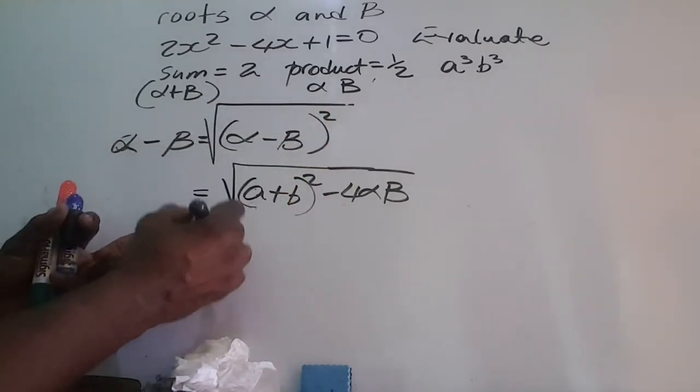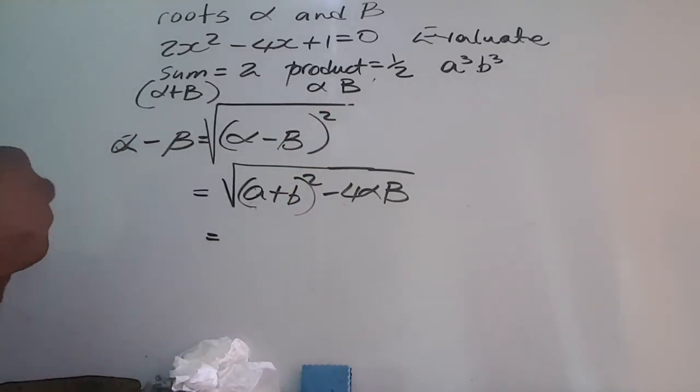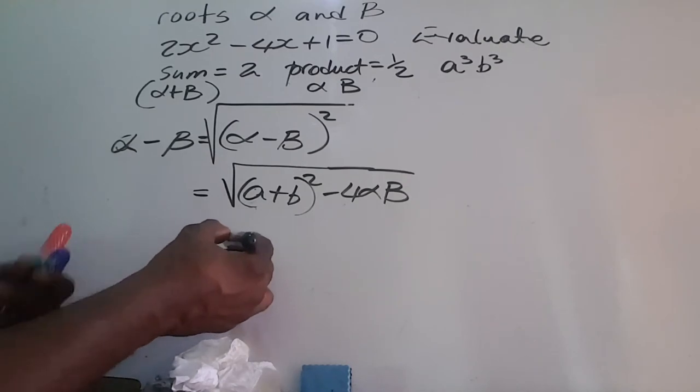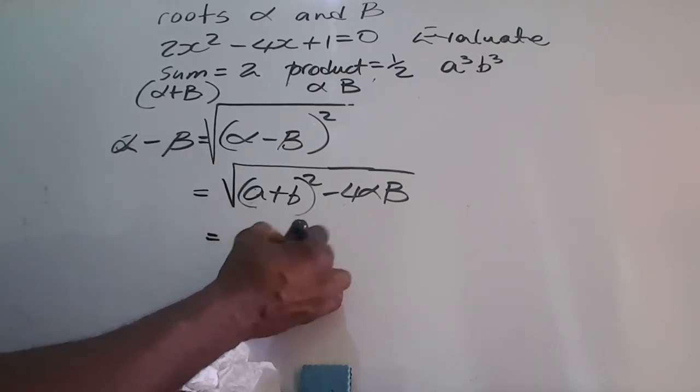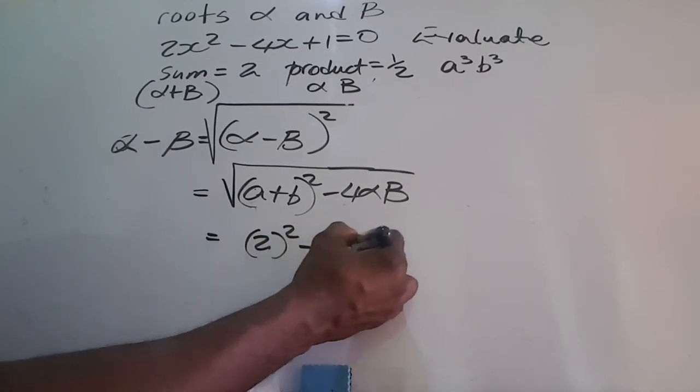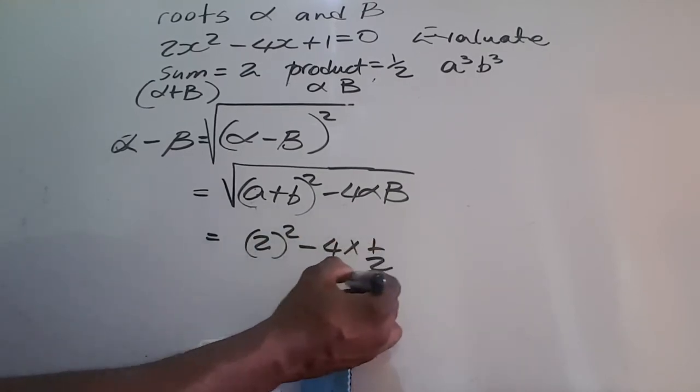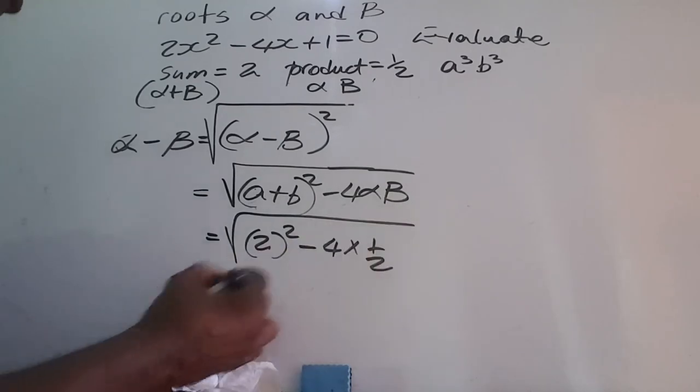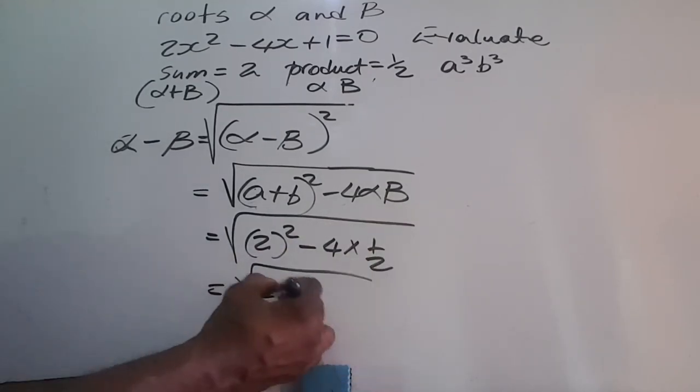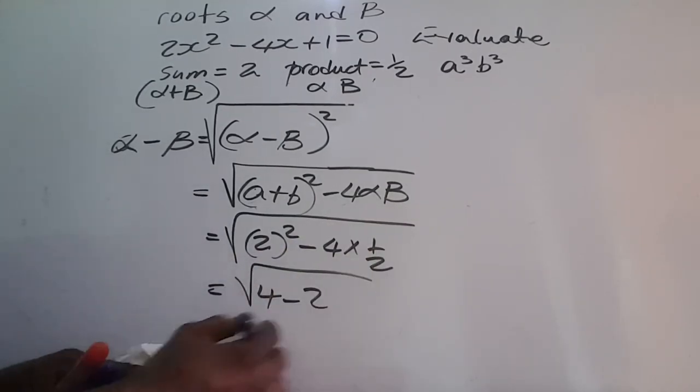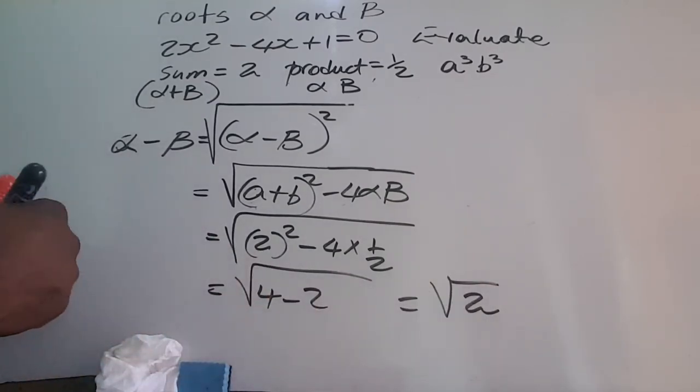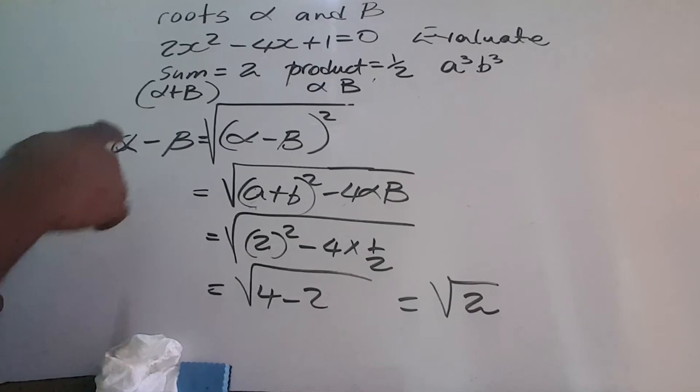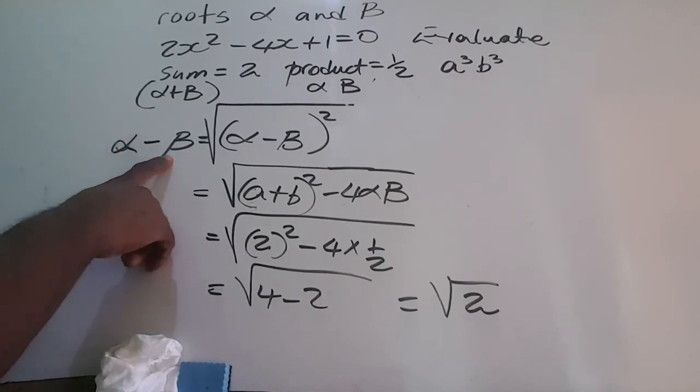In the same case, we're substituting these values. It's going to be 2 squared minus 4 times a half, and then the square root is there. We have 4 minus 2 which equals the root of 2. So for this one we have the root of 2 for alpha minus beta.